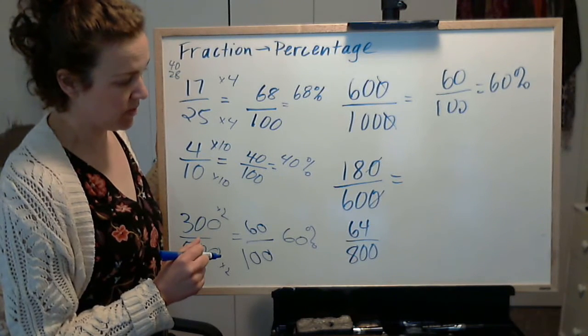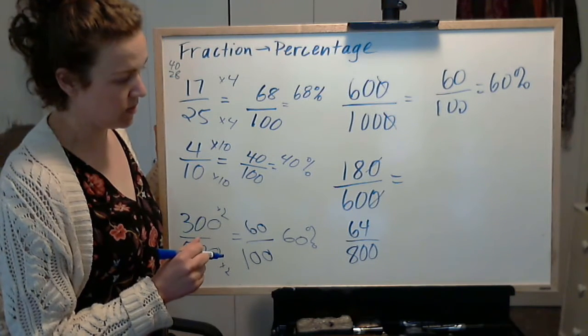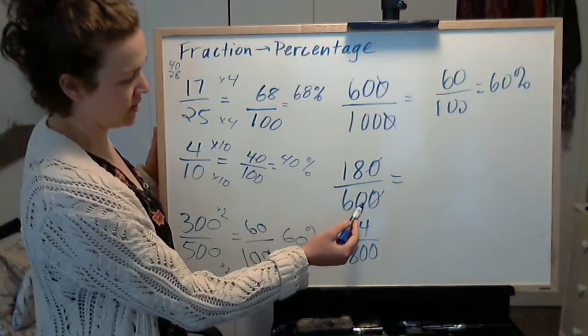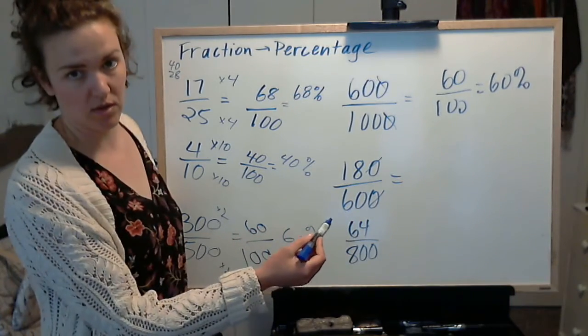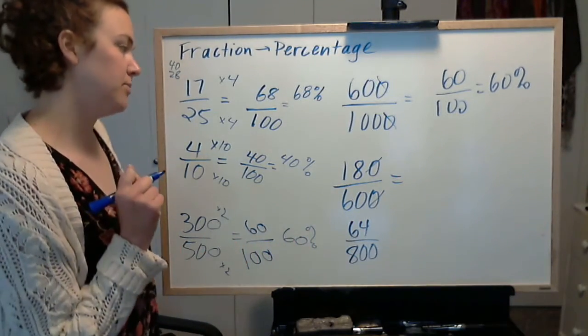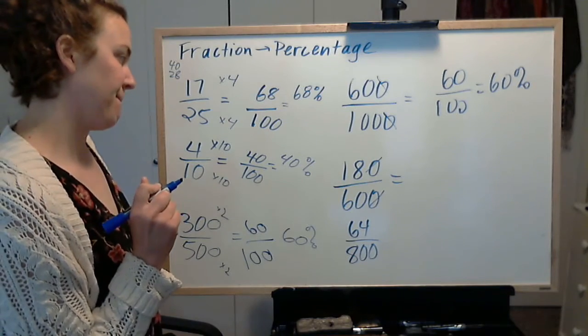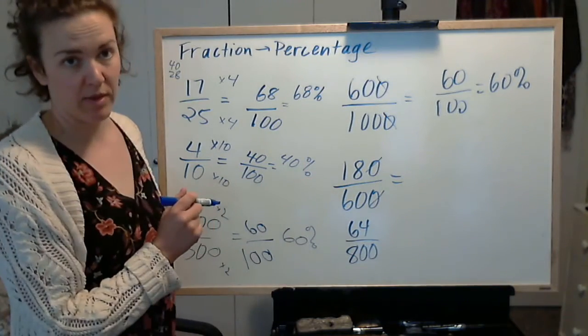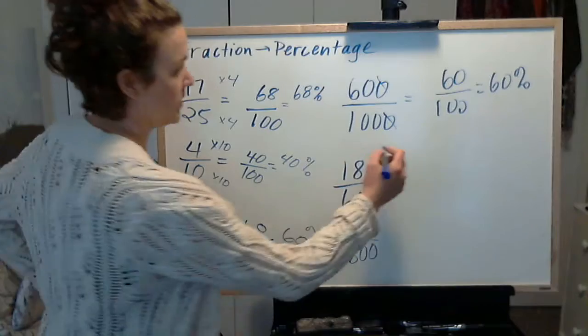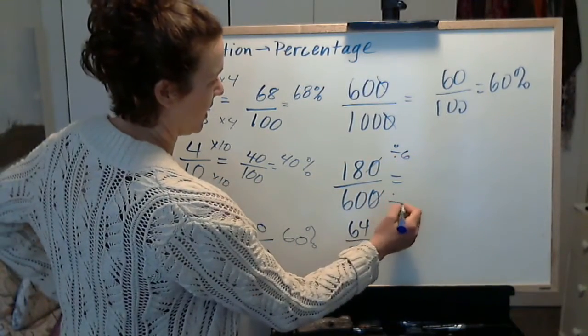And then I would simplify that more, because 60 doesn't go evenly into 100. So, 18 and 60 are both divisible by 6, so let's do that. Let's divide top and bottom by 6 and see what happens.